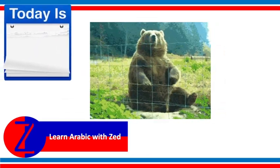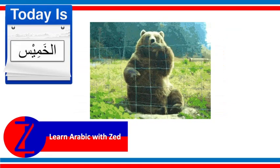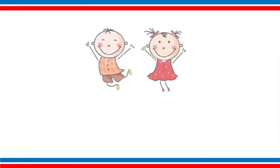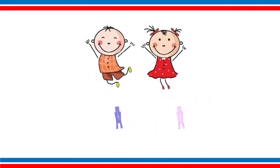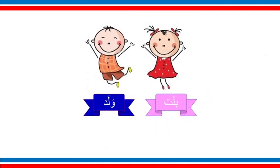اليوم الخميس — today is Thursday. You have two new vocabulary words: the right one is 'bent' and the left one is 'wlad'. The pink one is 'bent' and the blue one is 'wlad', so these are bent wa wlad.